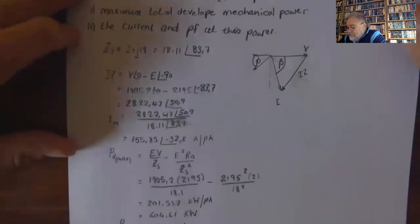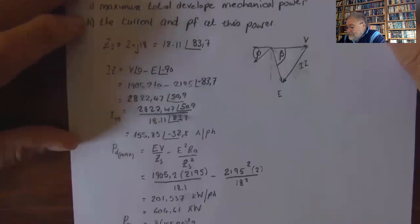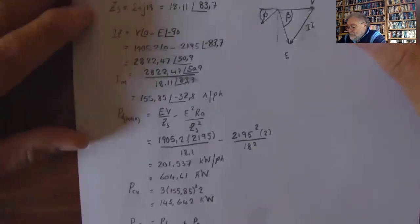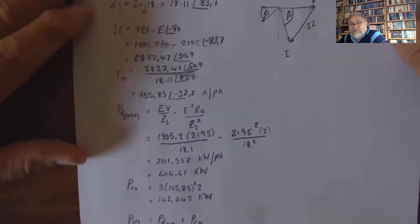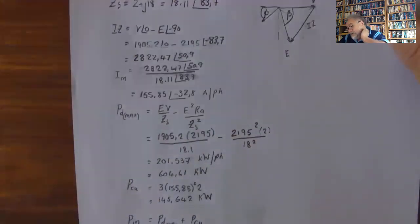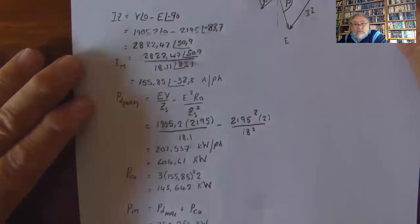The maximum developed power is E V over Z_s minus E squared R_A over Z_s squared, giving 201.537 kilowatts per phase, or 604.61 kilowatts total. Copper loss is 3 times 145.85 squared times R_A of 2, giving 145.642 kilowatts. The input is therefore the maximum power plus copper loss, totalling 750.252 kilowatts. The power factor is cos(32.8), which gives 0.841 leading.